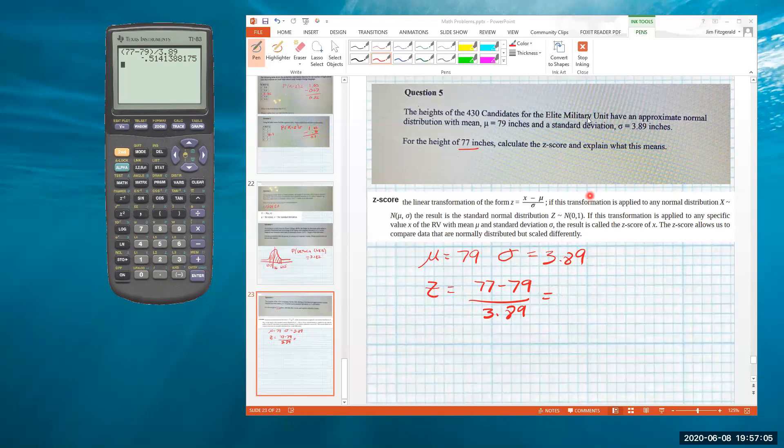They don't really say how many decimal places you'd want there, so I'd probably keep two or three, but it's going to be negative 0.514.